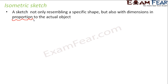Proportional doesn't mean equal. For example, if you want to draw a cube of side three centimeters, in an oblique sketch you are not sure if the side is exactly three centimeters, or if all the sides are equal. Basically, you are not sure whether the dimensions are accurate or in proportion to the actual object.